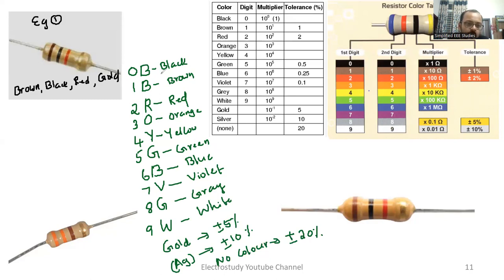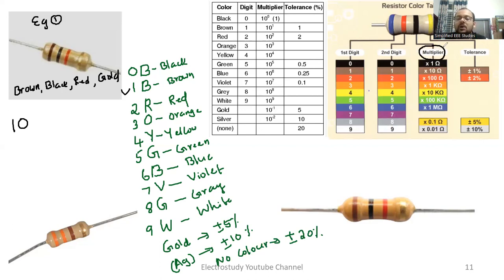Brown color — please identify the code for brown, which is 1. Next is black, and the code for black is 0. So the first two digits are 1 and 0. While writing the third digit, it is actually called the multiplier — it should be written as 10 to the power of the color code. Red color has a code equal to 2.